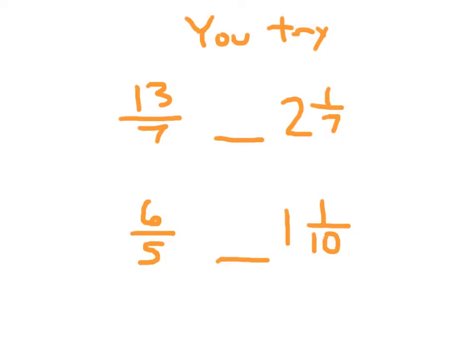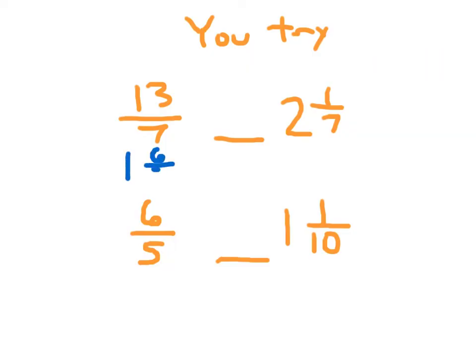Here are two problems for you to try. Please go ahead and copy them down. Be sure to have the same denominator for that second one. You're converting them so that you're comparing the same things — either both mixed numbers or both improper fractions. Please hit pause. Your work may be different, but you must show your work. 13 sevenths is equal to 1 and 6 sevenths. Comparing 1 and 6 sevenths with 2 and 1 seventh, I already know that this is less than, because 1 is less than 2.